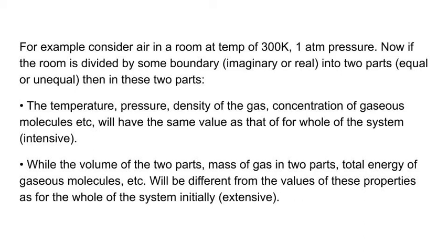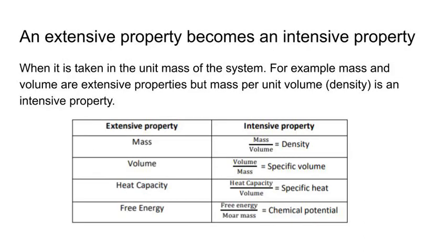Now, an extensive property becomes an intensive property when it is taken in the unit mass of the system. For example, mass and volume are extensive properties, but mass per unit volume is an intensive property. That is, extensive property mass upon volume is density, which is an intensive property. Similarly, volume upon mass is specific volume, that is again an intensive property.